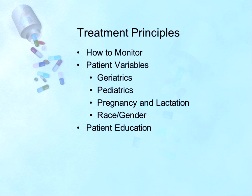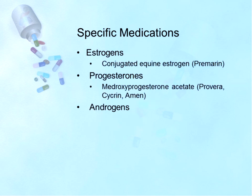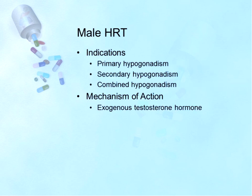For specific medications, estrogens include conjugated equine estrogen (Premarin). Progesterones include Provera. For male hormone replacement therapy, these are indicated for primary hypogonadism due to diseases of the testes, secondary hypogonadism due to diseases of the hypothalamus and pituitary, or combined hypogonadism due to diseases of both testes and hypothalamus/pituitary. Male hypogonadism is defined as a lack of testosterone production by the testes due to either disease of the testes itself or to the hypothalamic-pituitary-testicular axis. In general, hypogonadism is severe and produces male infertility.